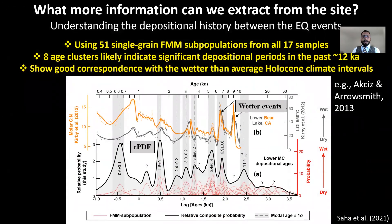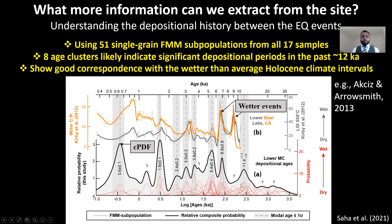We further analyzed the single grain ages, with all ages and relative probabilities shown in log scale. All red PDFs are probability distributions of individual finite mixture model subpopulations, and the black PDF is the composite. Using 51 single grain subpopulation ages identified by the finite mixture model from all 17 samples, we identified at least eight significant age clusters during the Holocene. Each prominent age cluster consists of three or more subpopulations. We interpreted those age clusters as significant depositional events, and they show good correspondence with wetter-than-average Holocene climate events, as shown by this proxy graph from Lower Bear Lake.